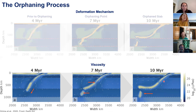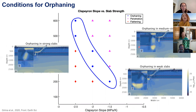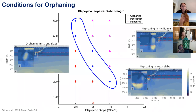Is orphaning limited to this one particular slab, a one-off behavior? The regime diagram shows clearly that orphaning can occur for strong slabs and medium-strength slabs, but also for weak slabs provided this is offset by some amount of resistance from the mantle.